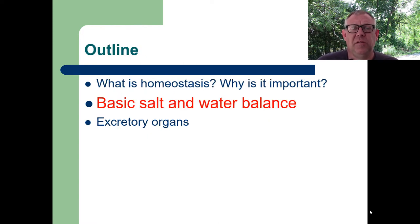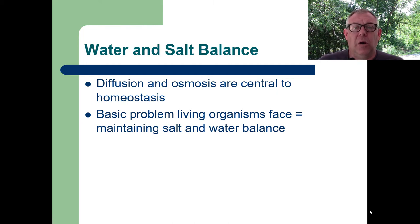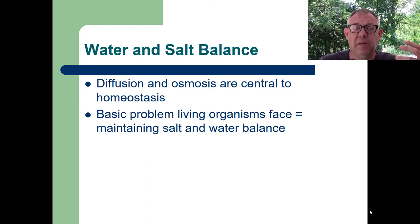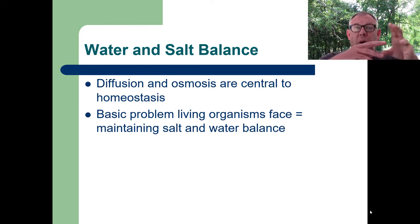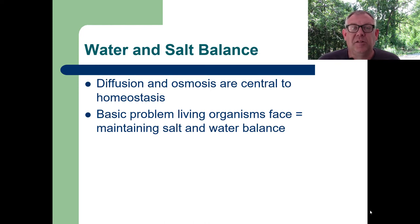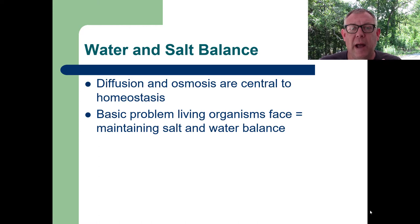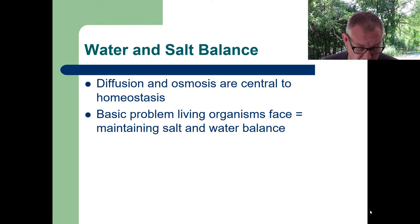Now let's put these concepts into practice and talk about basic salt and water balance. When talking about salt and water balance, we also need to talk about diffusion and osmosis. Salts will diffuse down their concentration gradient if they can. If they can't, water will diffuse down its concentration gradient relative to the salt — and that's osmosis. This is a basic problem that all living organisms face. When we talk about salt, we're not just talking about sodium chloride; we're talking about salts, about ions — charged particles.